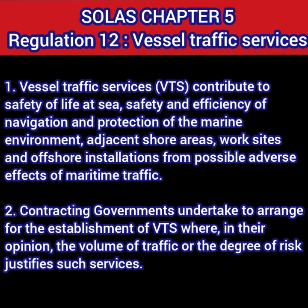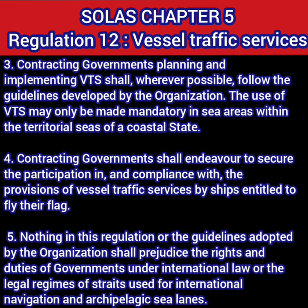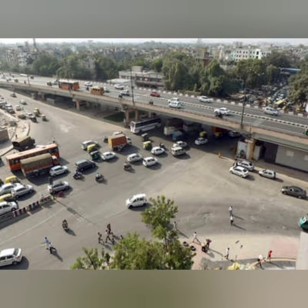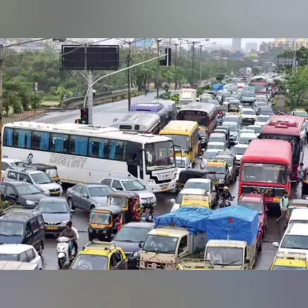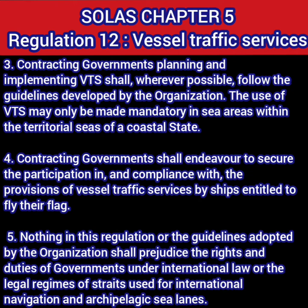A contracting government may form a VTS where the degree of risk justifies such services in their area. VTS is like a traffic light or traffic control on land. Whenever there is an area with a lot of traffic converging on a single point, the government sometimes decides to put a red light there to control traffic. Similarly, at sea, if a contracting government feels there is a lot of risk to environment, people, or place because of traffic, they form vessel traffic services to manage it effectively.